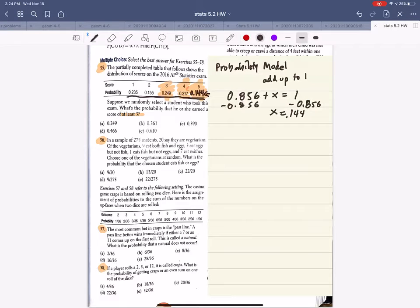I can add those together because they're mutually exclusive. So if you think of it, out of 1,000 people, 249 out of 1,000 got a 3.